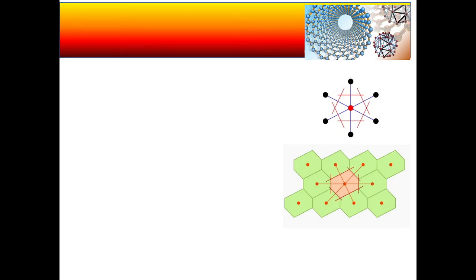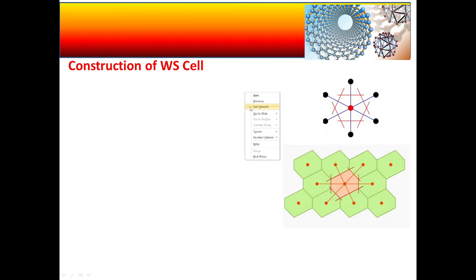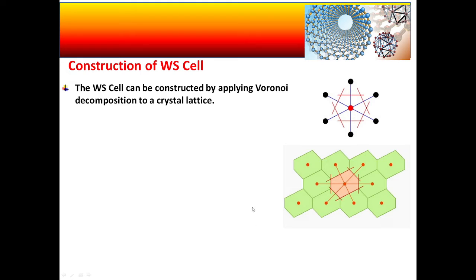Now let us see how we can create a Wigner-Seitz cell, which I have written as WS cell — WS standing for Wigner-Seitz. For construction, the general method that is followed is the Voronoi decomposition method to create such Wigner-Seitz cells.